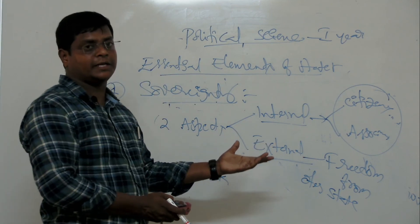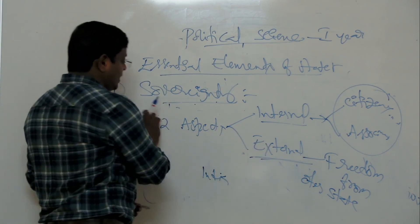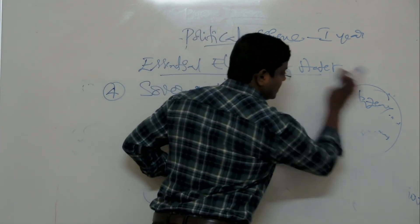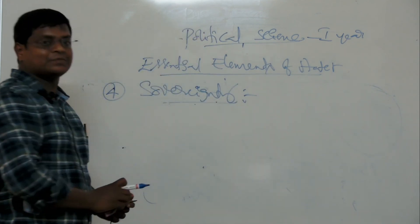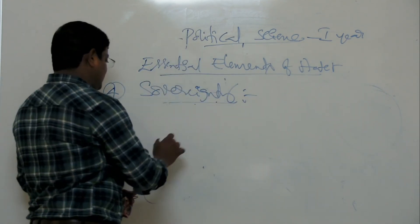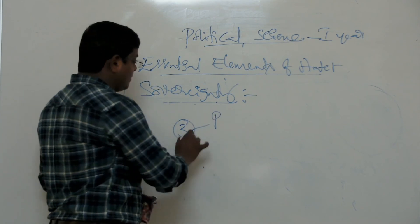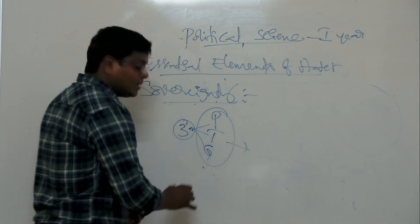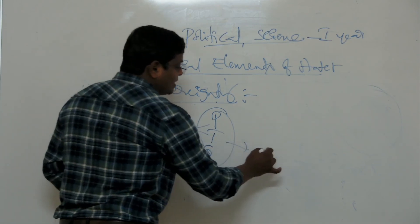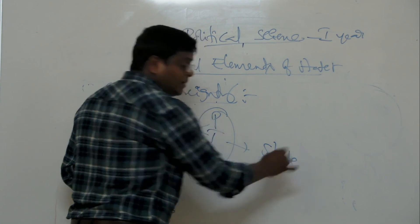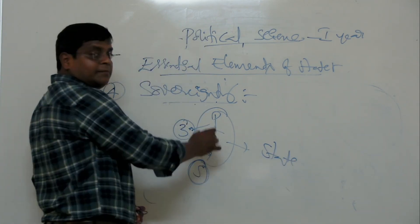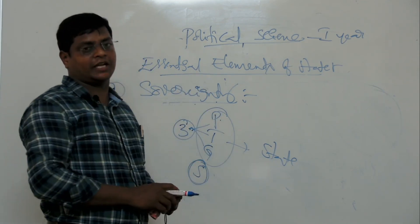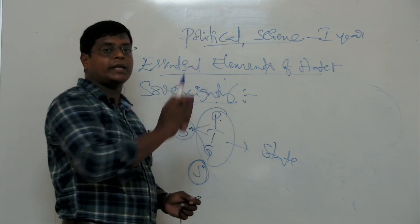Sovereignty is a very powerful and prominent element of the state. Without sovereignty, even if there are people, territory, and government, it is not considered a state. That means without sovereignty, the area, the people, and the government are not treated as a state. That is why sovereignty is like the life of the state — it is very essential.